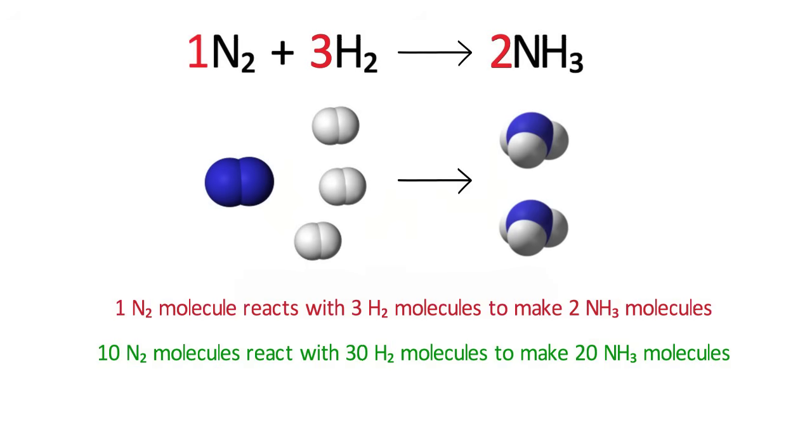Yes, we're talking about one mole of nitrogen. And one mole of nitrogen will react with three moles of hydrogen to make two moles of ammonia. Where am I getting those numbers? They are the big numbers in front of the chemicals in the balanced reaction.